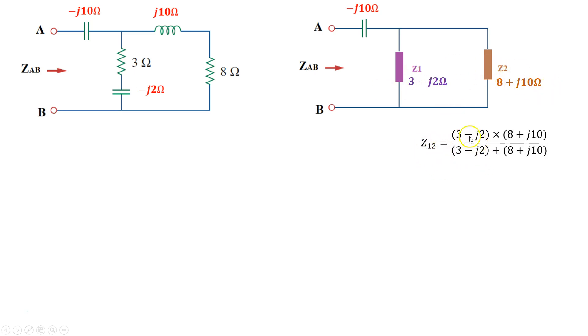We'll call that impedance z12, which is the following. And using my calculator, I calculated this particular impedance ratio as being 3.22 - j1.07 ohms.